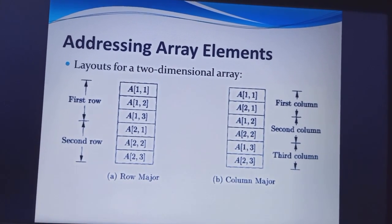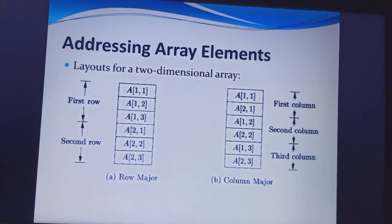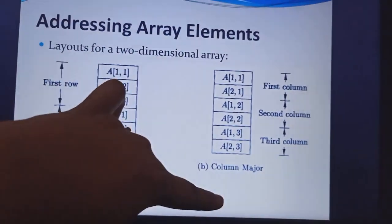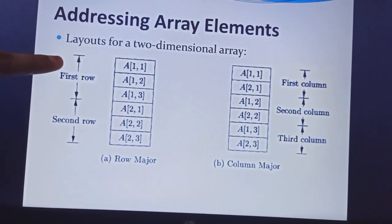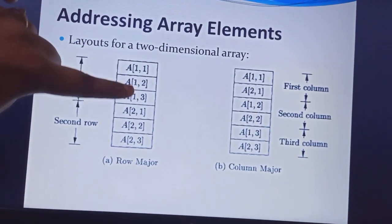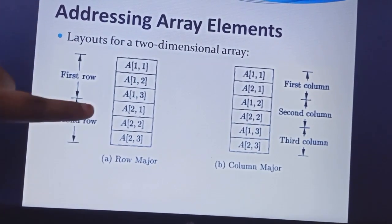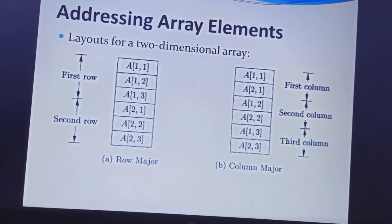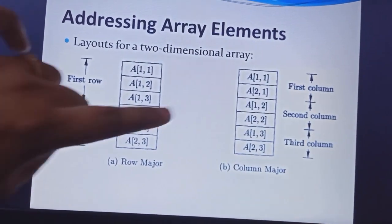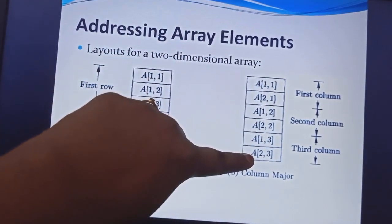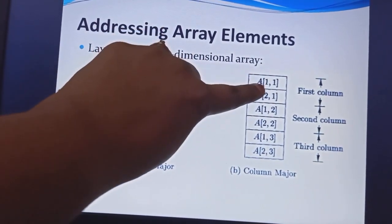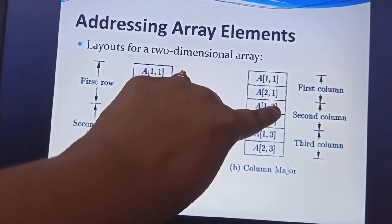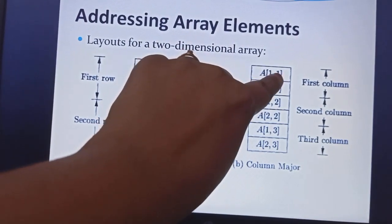This is addressing array elements. In this, a two-dimensional array is taken with row and column measure values. In the first row, the row value is 1 only. In the second row, the row value is 2. If the array element 3 is there, then the row value is 3. In the column, three columns are created: the first column, the second column, and the third column with row data and column data.